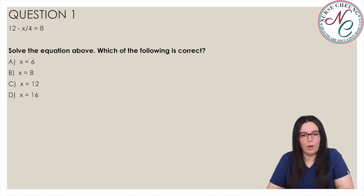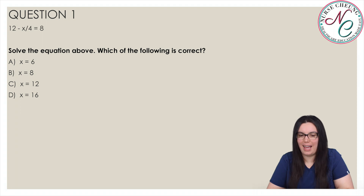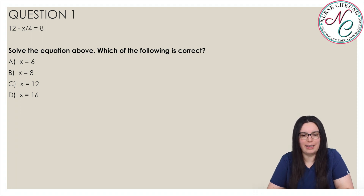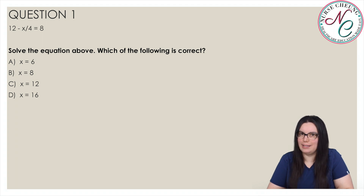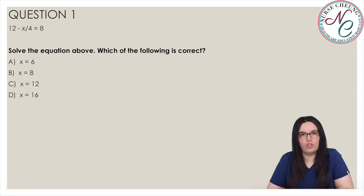Question 1: 12 minus x over 4 is equal to 8. Solve the equation above — which of the following is correct? Is A, x is equal to 6; B, x is equal to 8; C, x is equal to 12; or D, x is equal to 16.